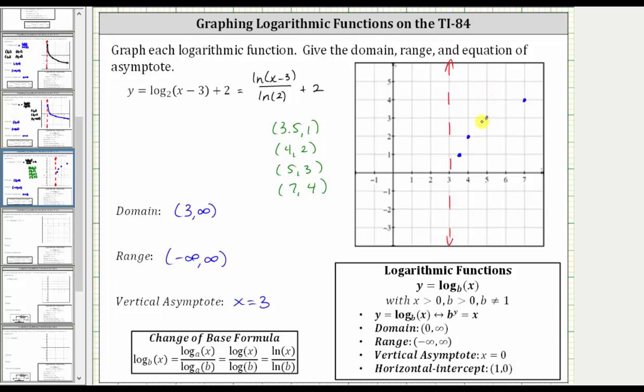We know the function is going to approach the vertical asymptote, and therefore on the left, the graph looks something like this. On the right, the function passes through this point and continues to increase, something like this. I hope you found this helpful.